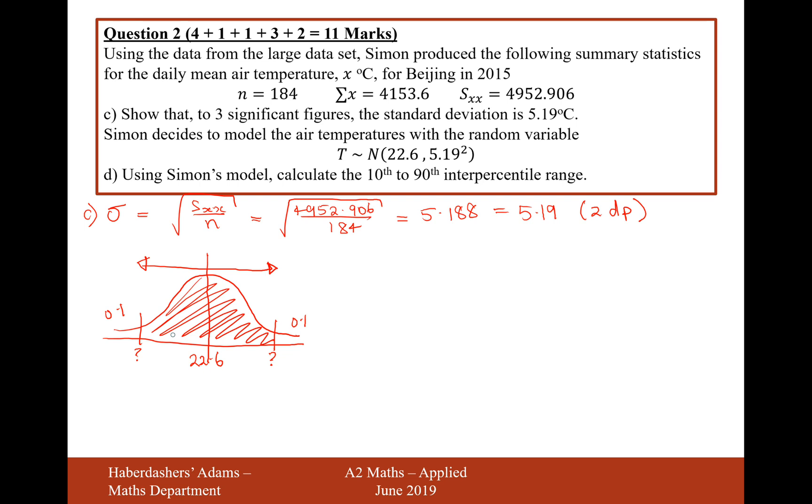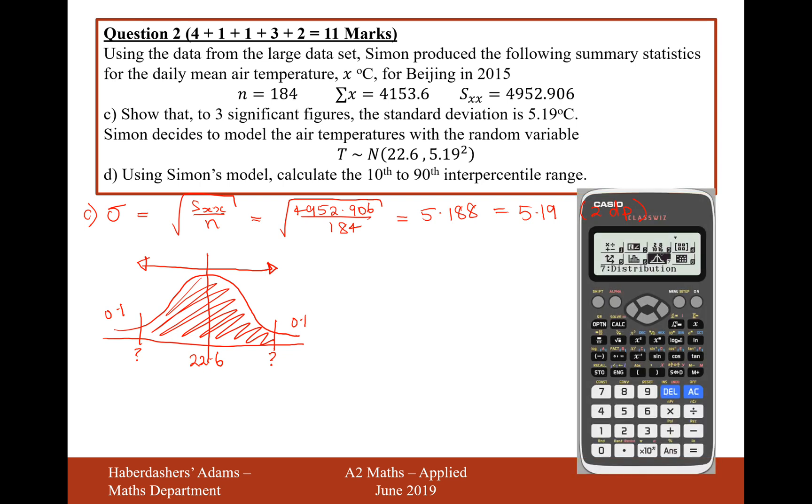So let's grab our calculator then. We go to the normal distribution mode and we'll work out what this value here is first. We need to work out the point at which we have 0.1 probability to the left when our mean is 22.6 and our standard deviation is 5.19. The correct mode we need for this on the calculator is going to the menu and hitting mode 7.